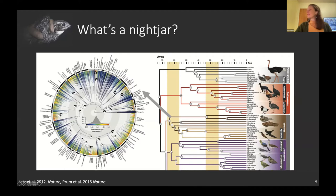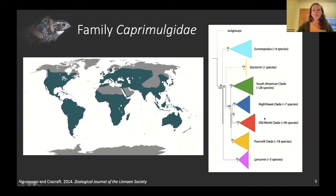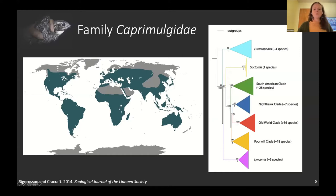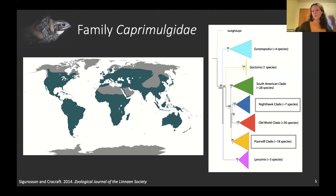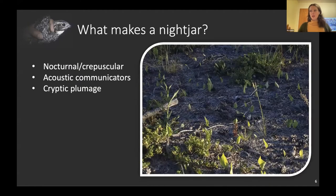Since that divergence, the Caprimulgidae family has expanded across the globe. This is the distribution of all nightjar species worldwide. In North America, we're dealing with two clades: the nighthawk clade and the poorwill clade. Those are the two we have here in North America.